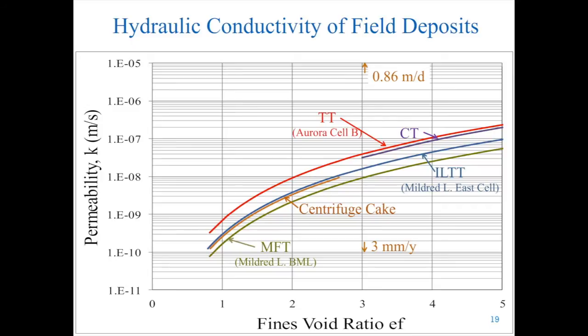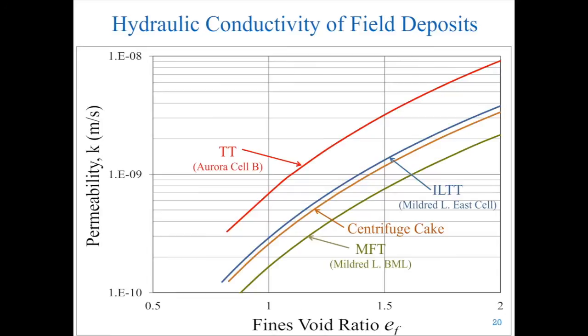Hydraulic conductivity is the most critical factor to the consolidation behavior of these clay-dominated deposits. Differences in compressibility do not appear to be large on a multi-cycle log chart. However, small differences in these properties can lead to substantial differences in rates of consolidation and years of settlement time in the deep deposits. Note that the upper point in the chart shows flow rate on the order of a meter per day, while near the bottom we are looking at a few millimeters per year.